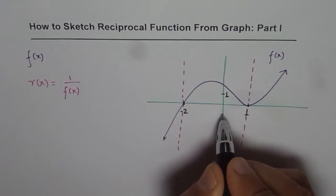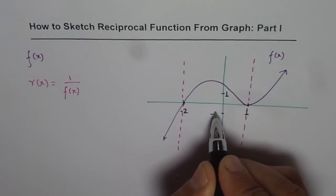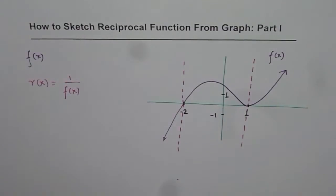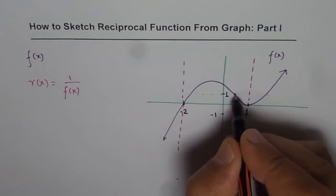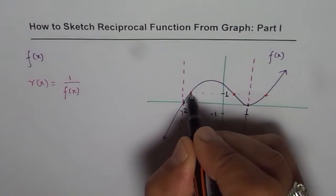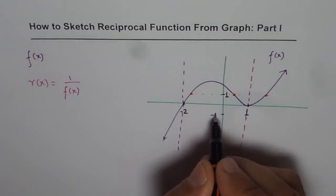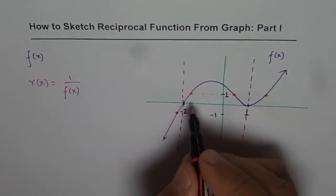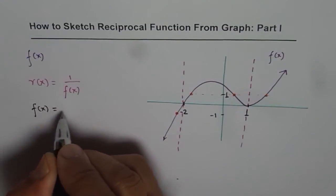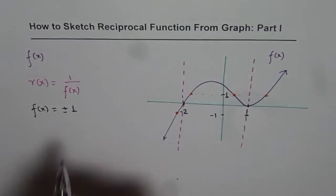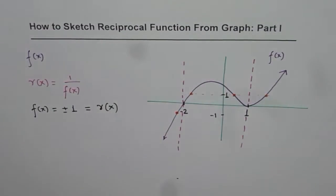And let us say this is minus 1. In that case, on the graph, where do we have the value 1? If I draw a horizontal line at 1, it intersects at 3 points. For minus 1, it intersects at this point. These points where f of x equals plus or minus 1 are the points where the reciprocal function is also plus or minus 1 — these are the invariant points. They are common to both the function and its reciprocal.